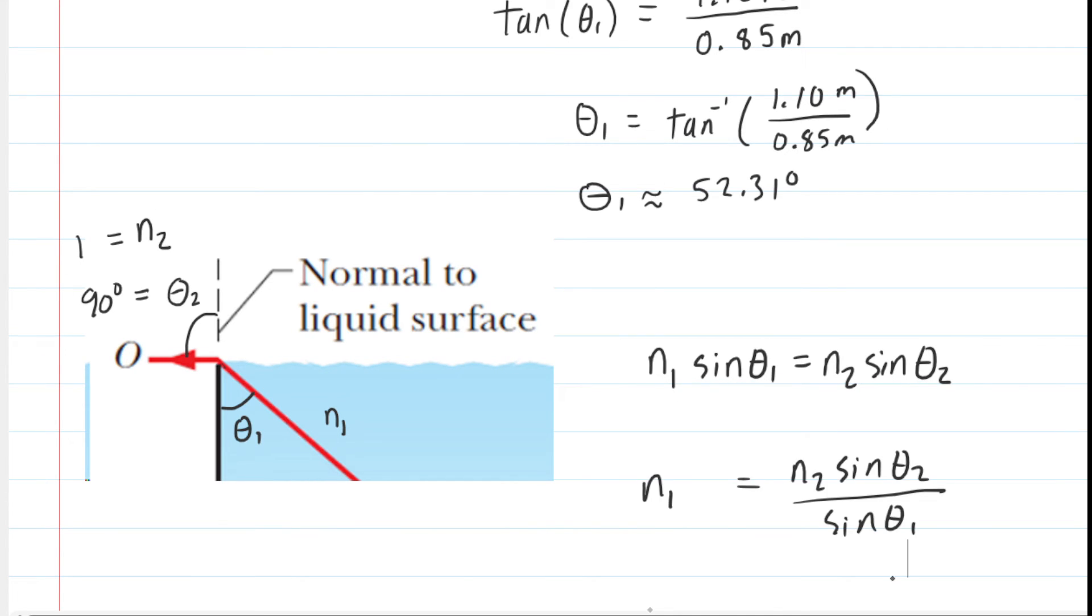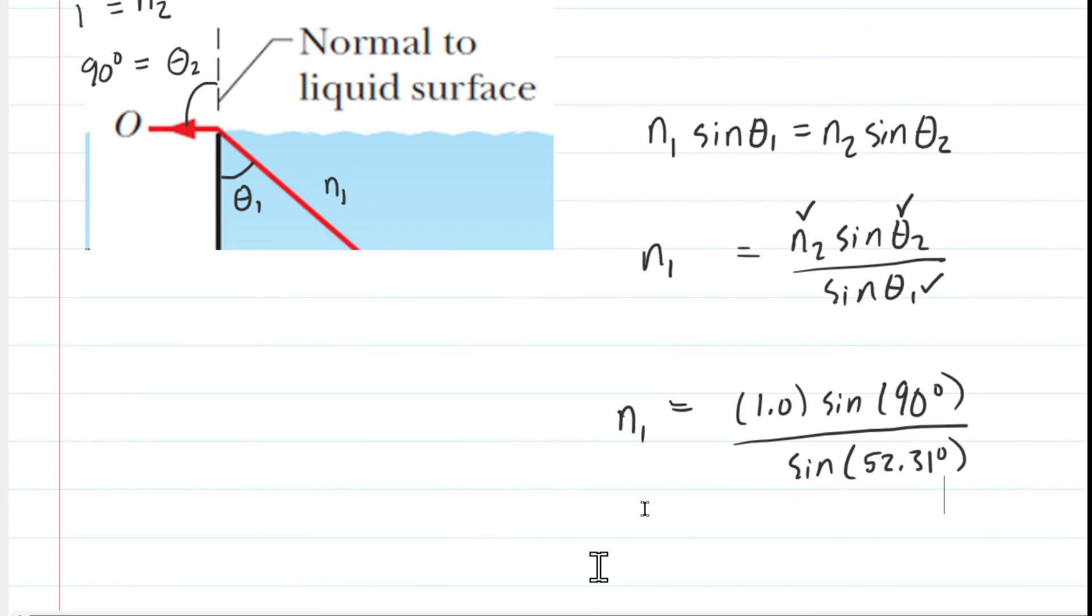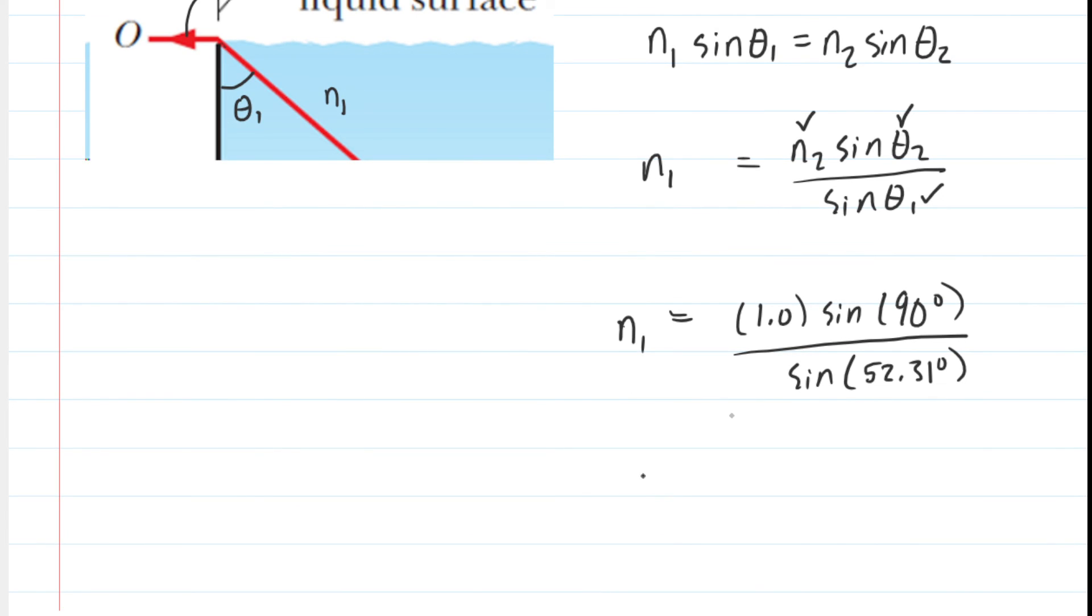Now we just plug in the known values. We have n₂ equals one, we know theta two is 90 degrees, and theta one we calculated earlier. Let's plug those values in. When we simplify this, we can see that n₁ equals approximately 1.26. So that would be the correct answer to the question.